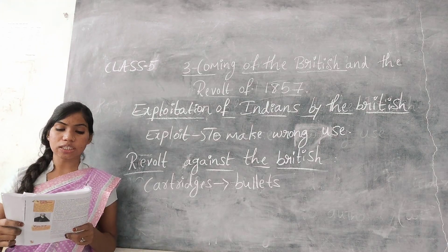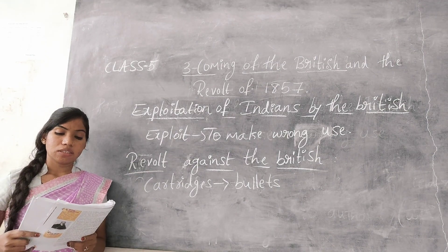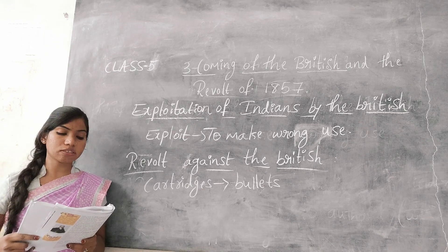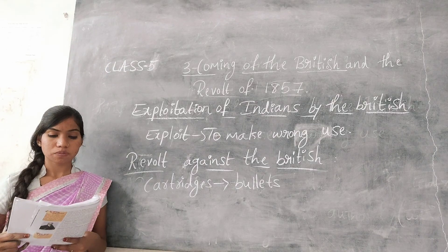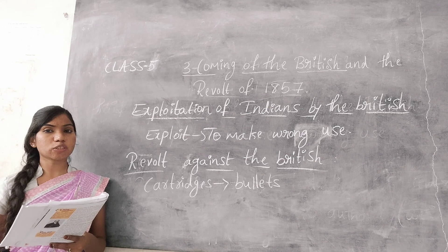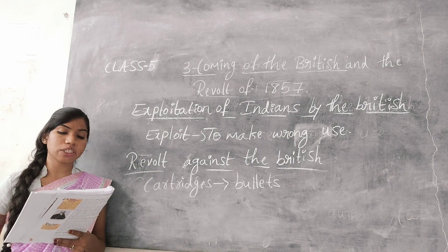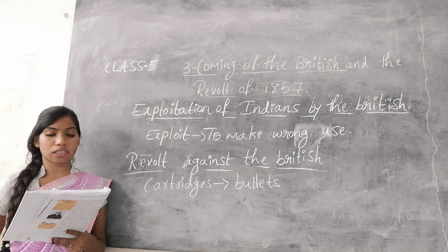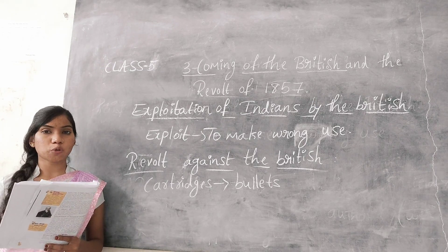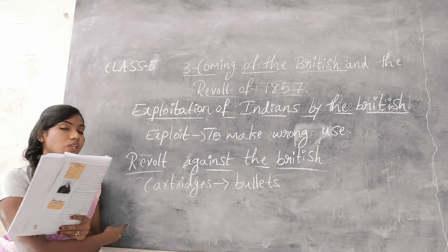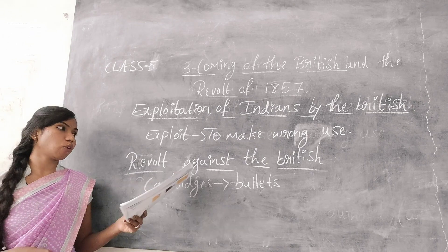This was against the religious sentiments of both the Hindu and the Muslim soldiers. So this was against the rituals of Hindus and Muslims. Indian soldiers refused to use these rifles, and the revolt started.